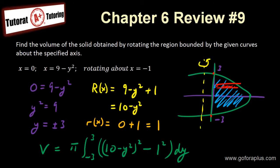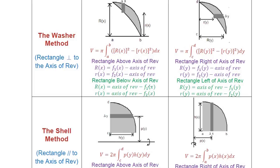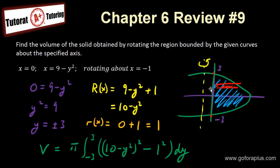Remember, the key to choosing the right method is determining whether your rectangle is parallel or perpendicular to the axis. Once you choose that, determine if it's in terms of dy or dx. Then check whether the region is on the left or right side of the axis to pick the correct radius. For more information about volumes, please visit my website go4aplus.com.